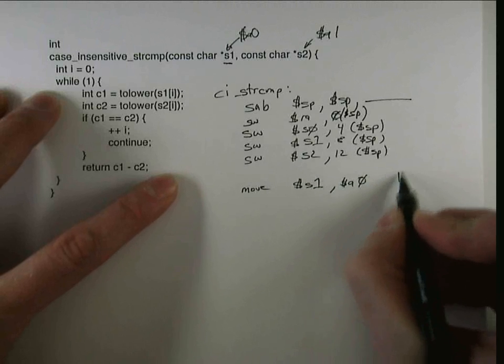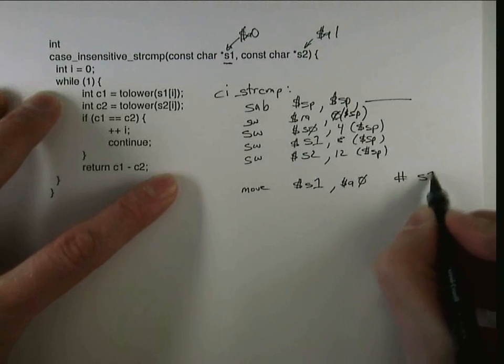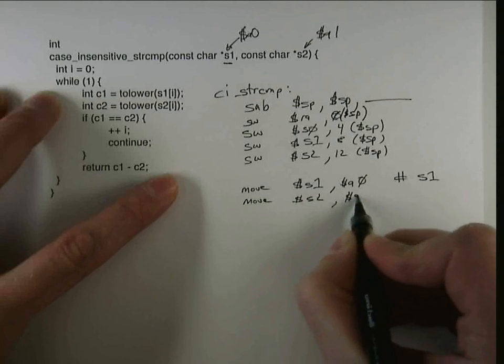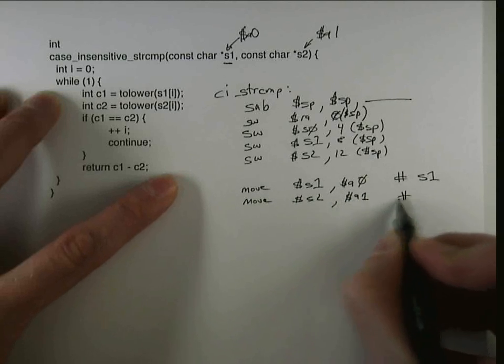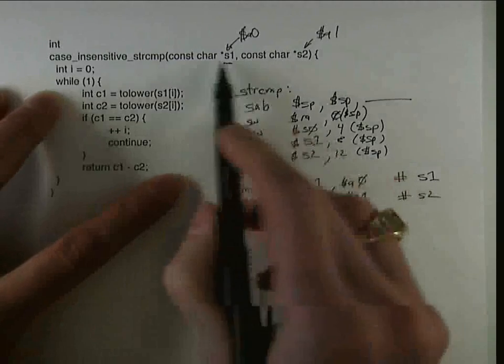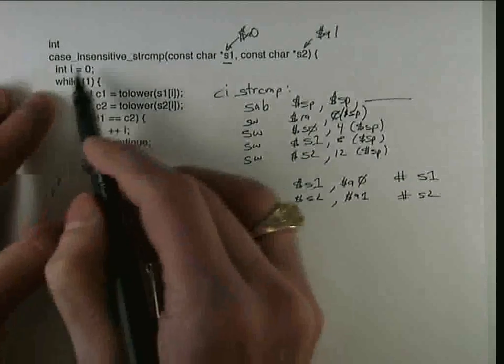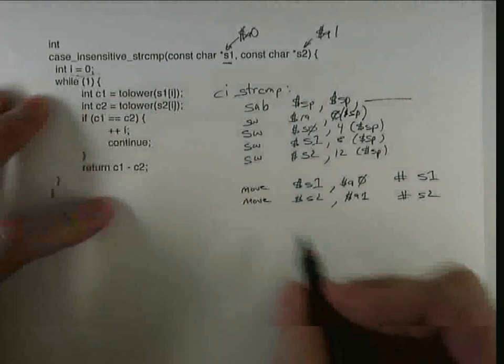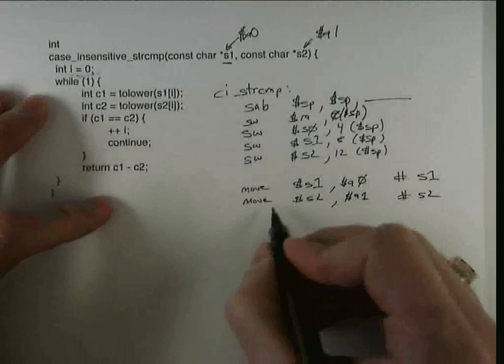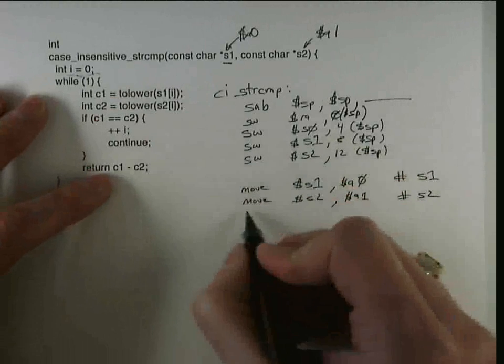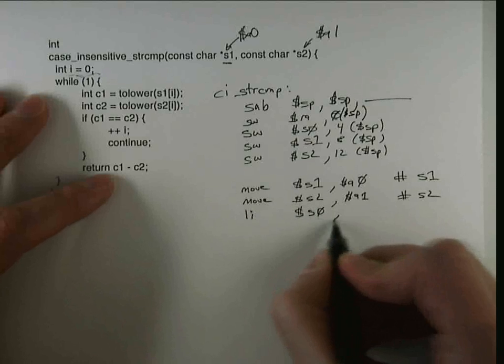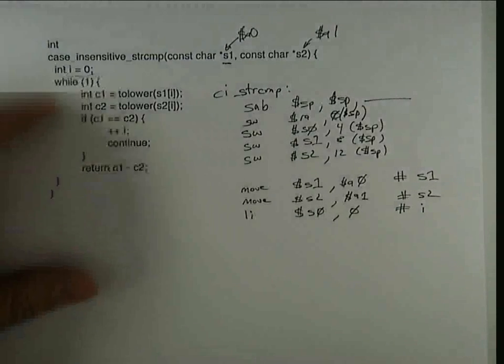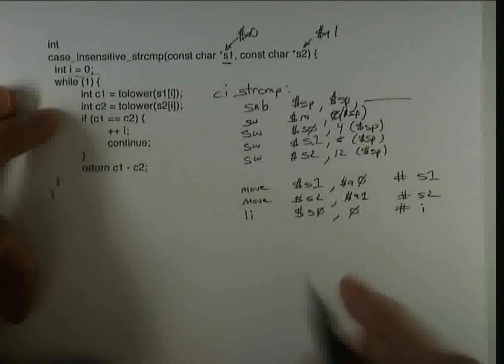So a0 gets copied to register s1, and a1 I'm copying to s2. So now I've allocated these into these s registers, I'm ready to continue with i, which before we allocated to t0, I'm going to again allocate that to a callee saved register s0. So I do a load immediate into s0 of 0, and that gives us i, and now I'm ready to enter the body of the loop.